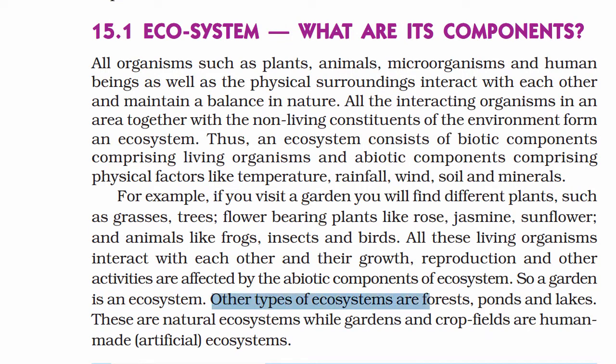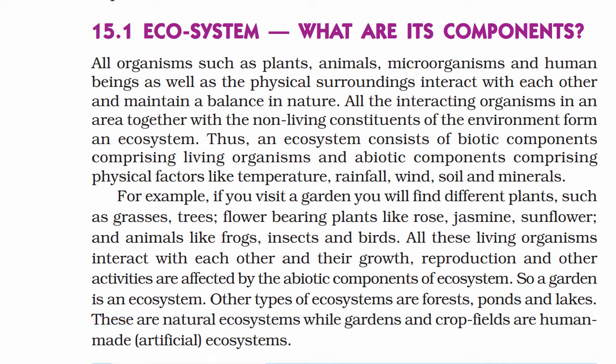There are natural ecosystems — forest, ponds, and lakes. A pond or lake is a water body and is a natural ecosystem. While garden and crop fields are artificial ecosystems. This is the first part of the ecosystem.